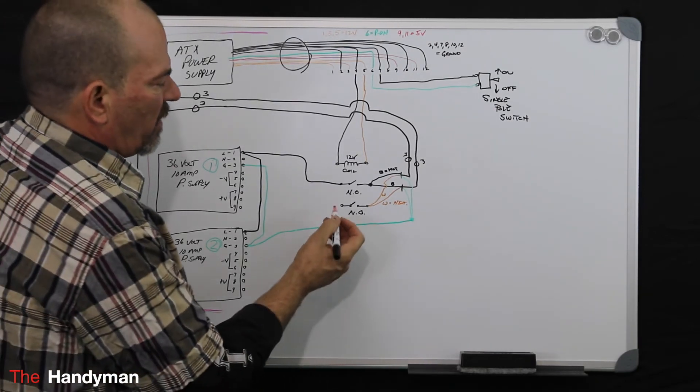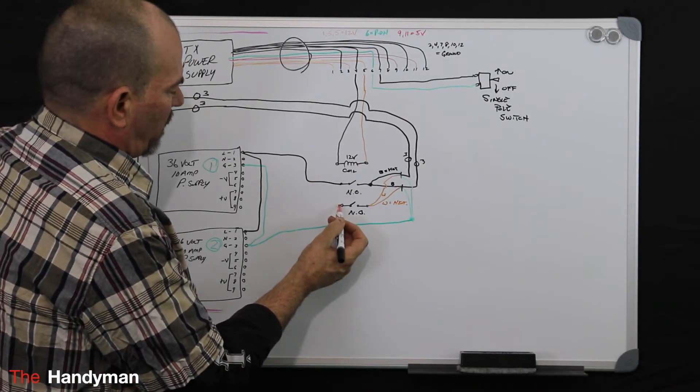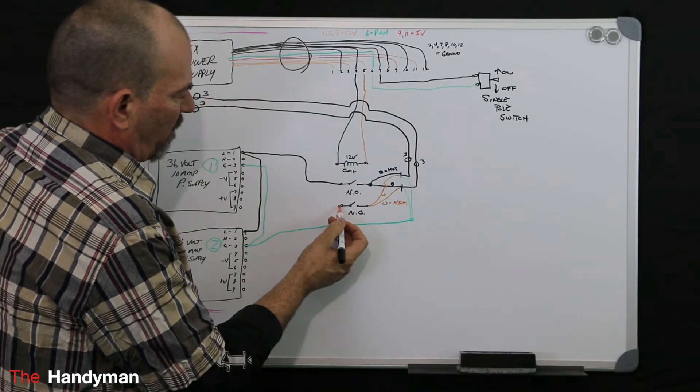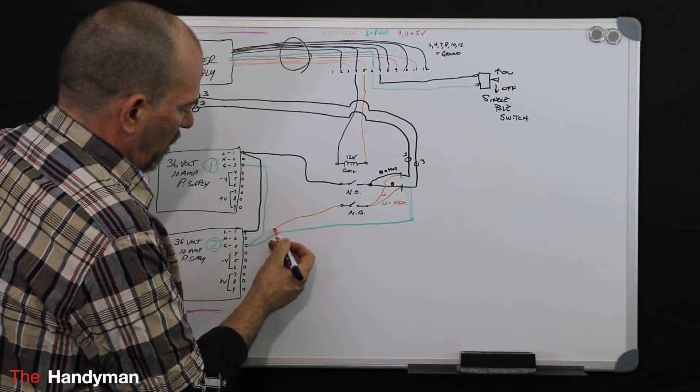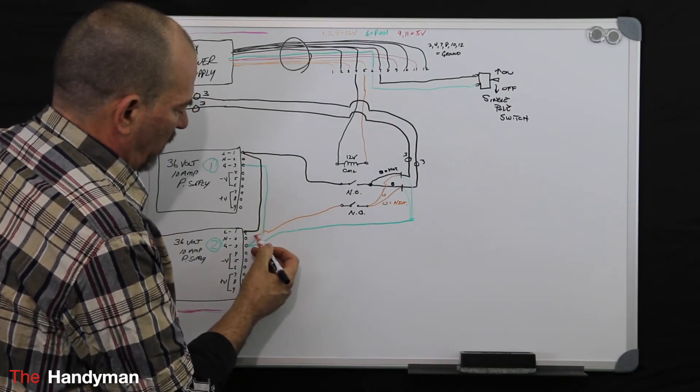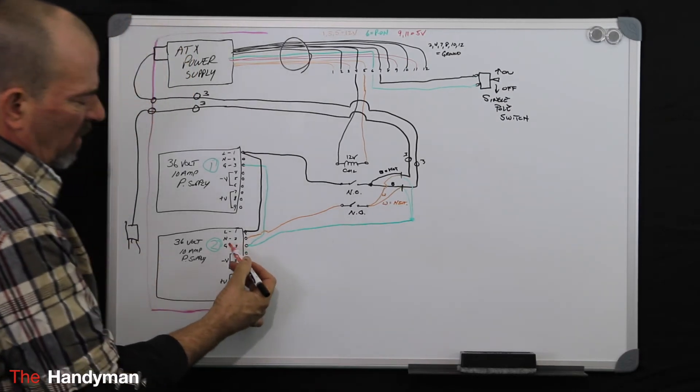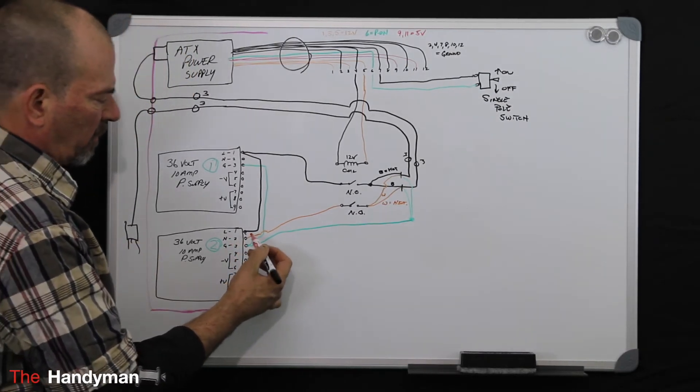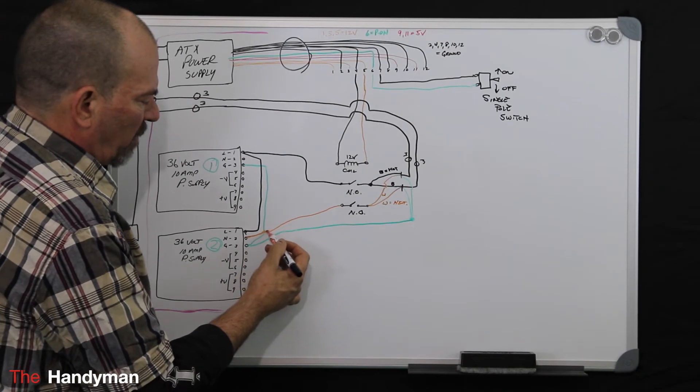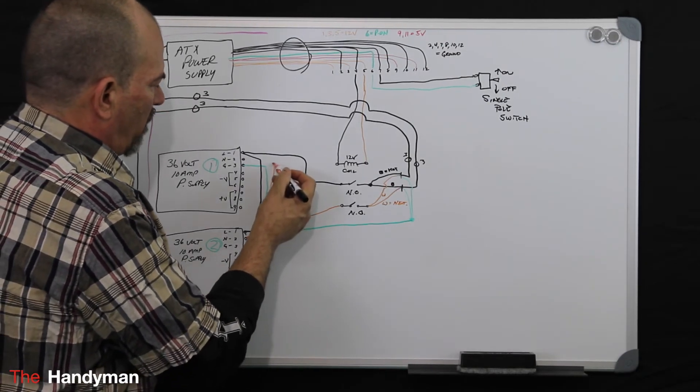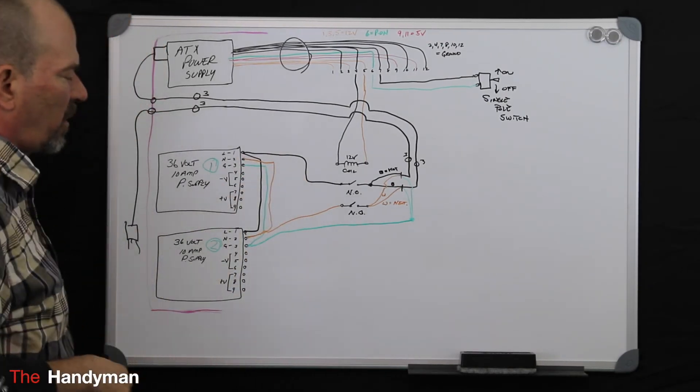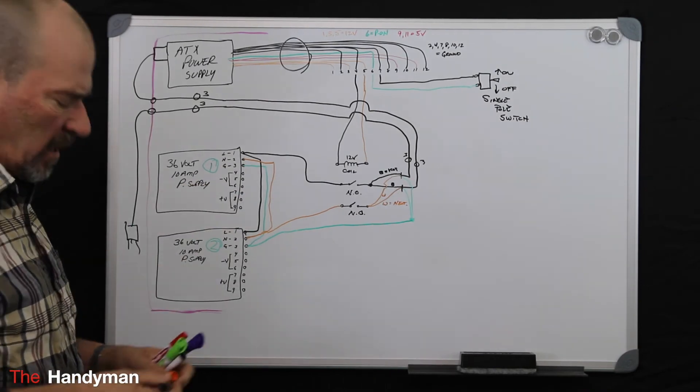And then on the other side of your other normally open contact, you're going to do the same thing. You're going to come down to terminal number two, which is for your neutral, make yourself a jumper, come up, and go to terminal number two. And it's as easy as that, it'll simplify things.